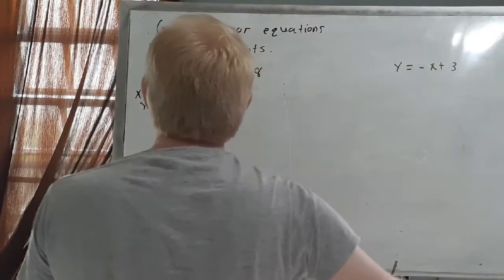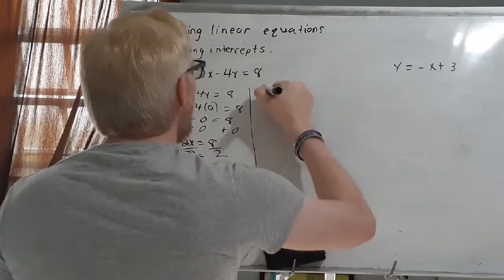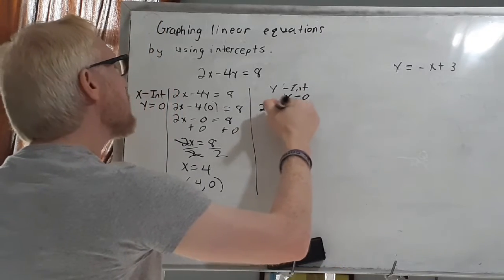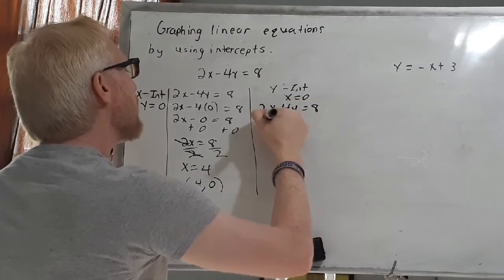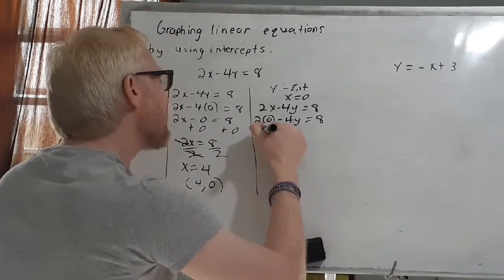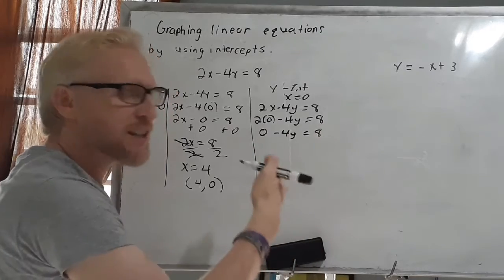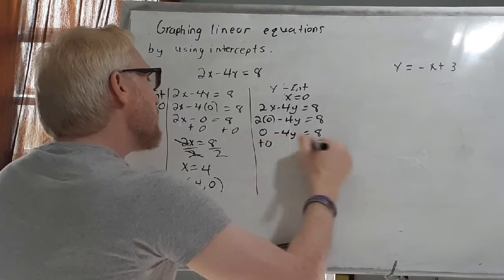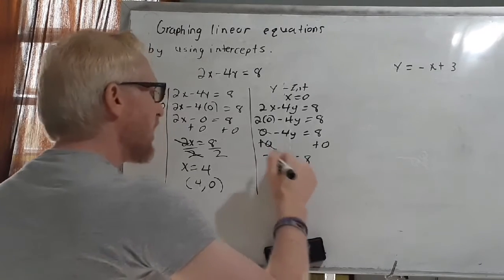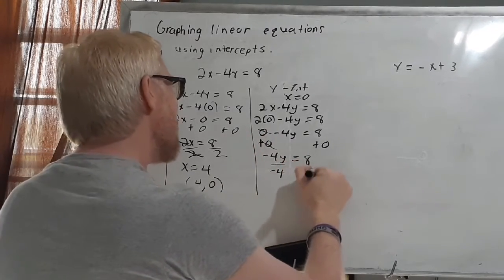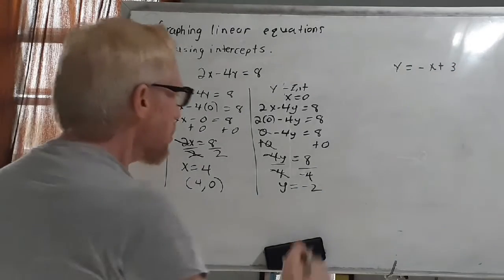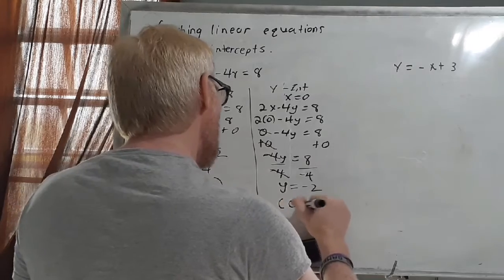Now looking for our y-intercept — always remember that when looking for the y-intercept, x equals 0. So I rewrite the equation 2x minus 4y equals 8, replacing x with 0: 2 times 0 minus 4y equals 8. 2 times 0 is 0, so minus 4y equals 8. I divide by negative 4, and y equals negative 2. So my second ordered pair — since x equals 0 when finding the y-intercept — is (0, negative 2).